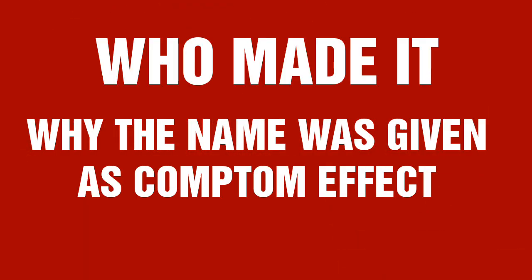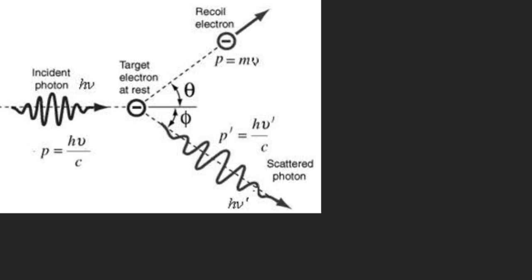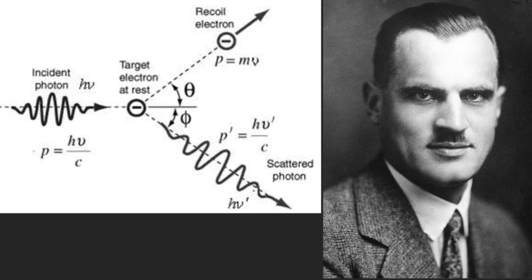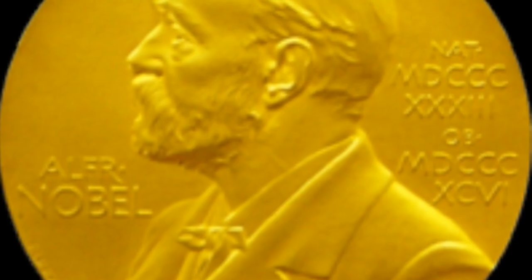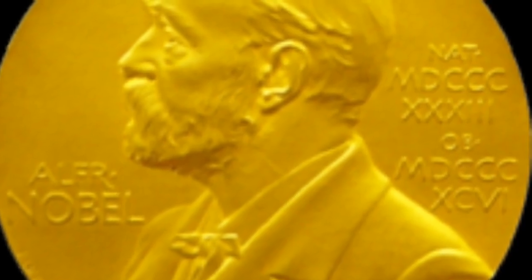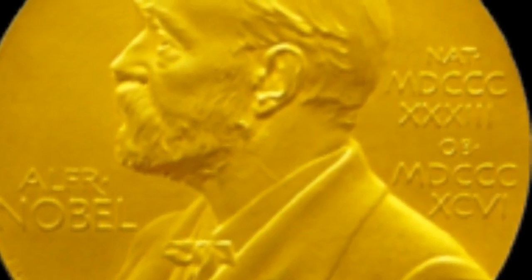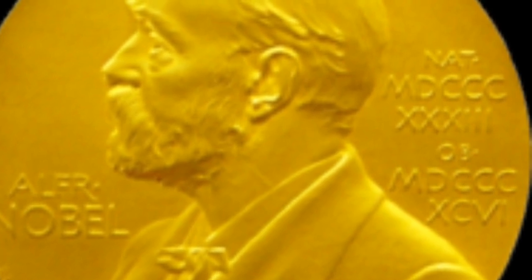Who made it? Why was the name given as Compton Effect? This effect was made by our scientist Arthur Compton. The Compton Effect's name was given by the physicist for the collision of a photon and electron. This effect led him to win the Nobel Prize in Physics in 1927.